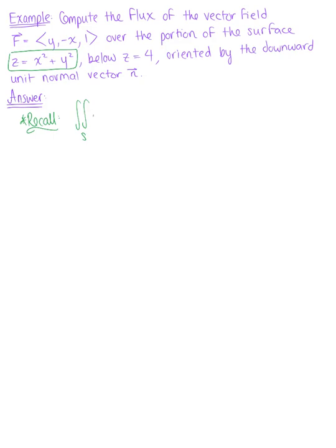The surface integral over S of the vector field dotted with the normal vector dS is equivalent to the double integral over the region R, the domain of S, defined by the dot product of the vector field with components f, g, h, dotted with the normal vector of the explicitly defined surface: minus the partial derivative of z with respect to x, minus the partial derivative of z with respect to y, 1, dA.